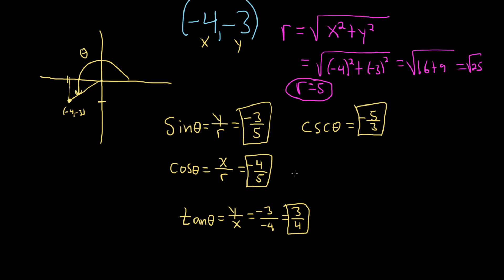And then the reciprocal of cosine is secant. So the secant of theta would be negative 5 over 4.